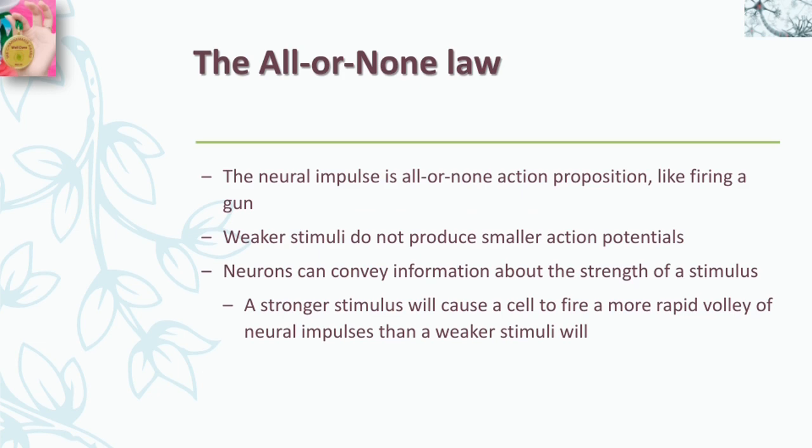Now let's come to the all-or-none law. The neural impulse is an all-or-none proposition — like firing a gun. You can't half-fire a gun. The same is true for the neuron's firing of an action potential: either the neuron fires or it doesn't, and its action potentials are all the same size. That is, weaker stimuli do not produce smaller action potentials. Even though the action potential is an all-or-nothing event, neurons can convey information about the strength of a stimulus by varying the rate at which they fire action potentials.